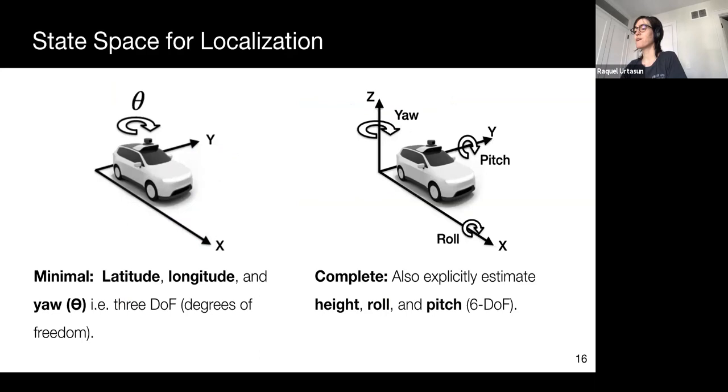While very minimal, this representation makes sense for vehicles, since they travel on the ground manifold, and the other three degrees of freedom, pitch, roll, and height, can be readily derived from the map.